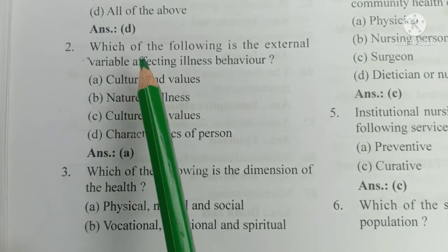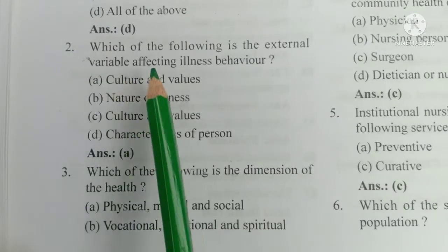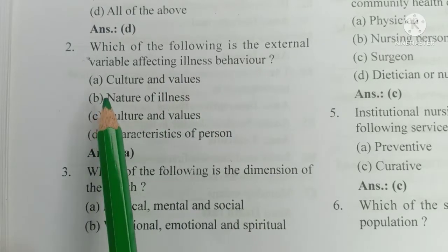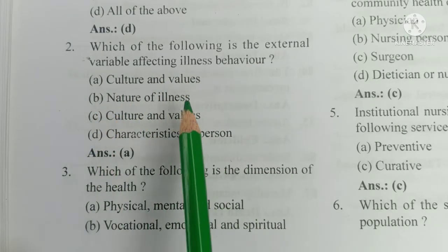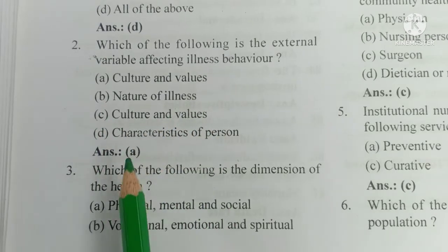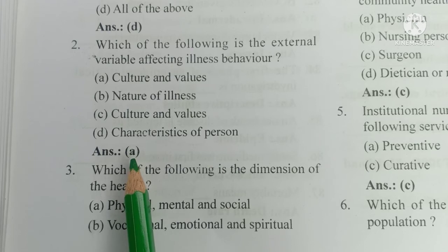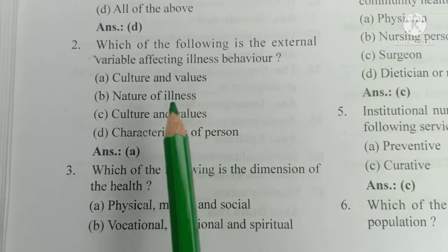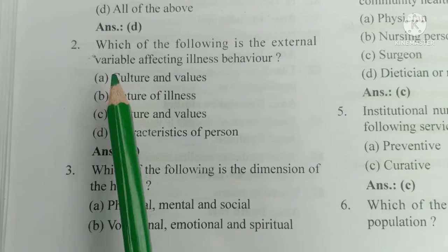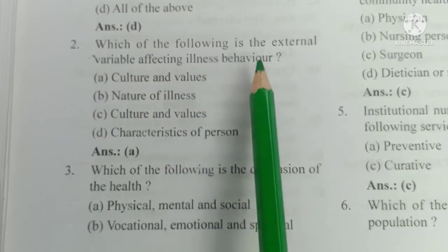Number 2. Which of the following is the external variable affecting illness behavior? A) Culture and values, B) nature of illness, C) culture and values, D) characteristics of person. The answer is A, culture and values. Culture and values is the external variable which affects illness behavior.